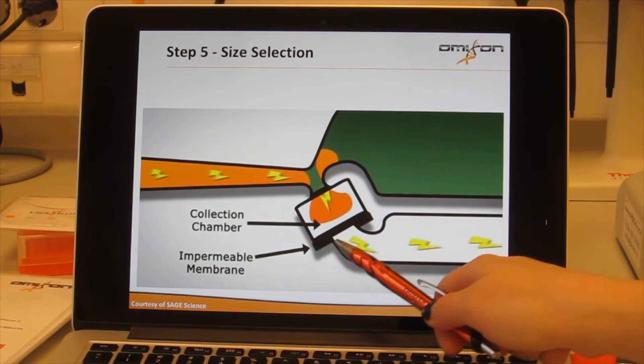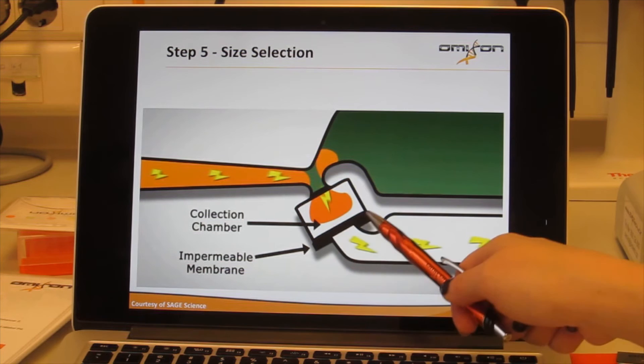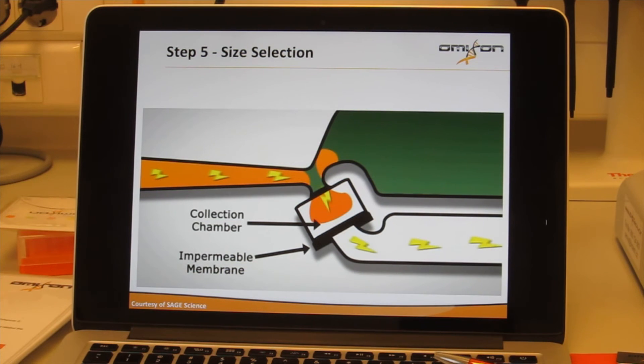This collection chamber has an impermeable membrane on the other side which prevents the library from falling into the buffer that exists in here, and that's pretty much it.